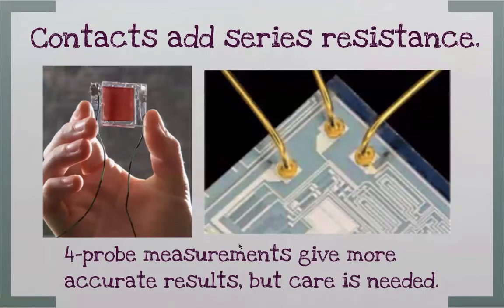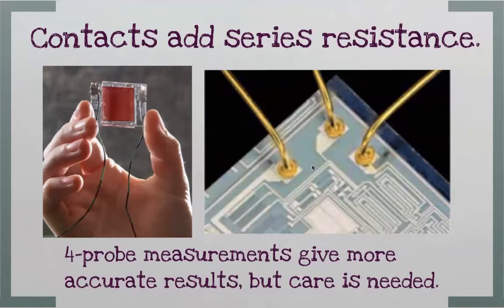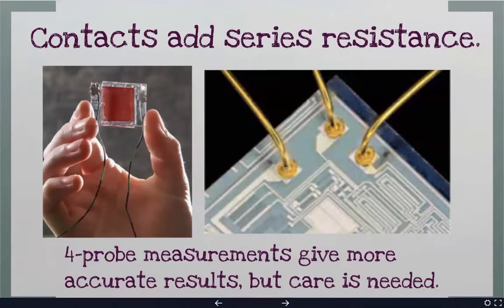When we test cells we always have to contact them — soldering on wires means we are adding series resistance that has nothing to do with the cell's performance but can affect measurements. As electrical engineers we know the way to avoid this is to do four-probe measurements. The contact resistance — how you make contact to the solar cell — is quite important, and four-probe measurements can overcome these limitations. You also have to do very careful bond pad contacts.